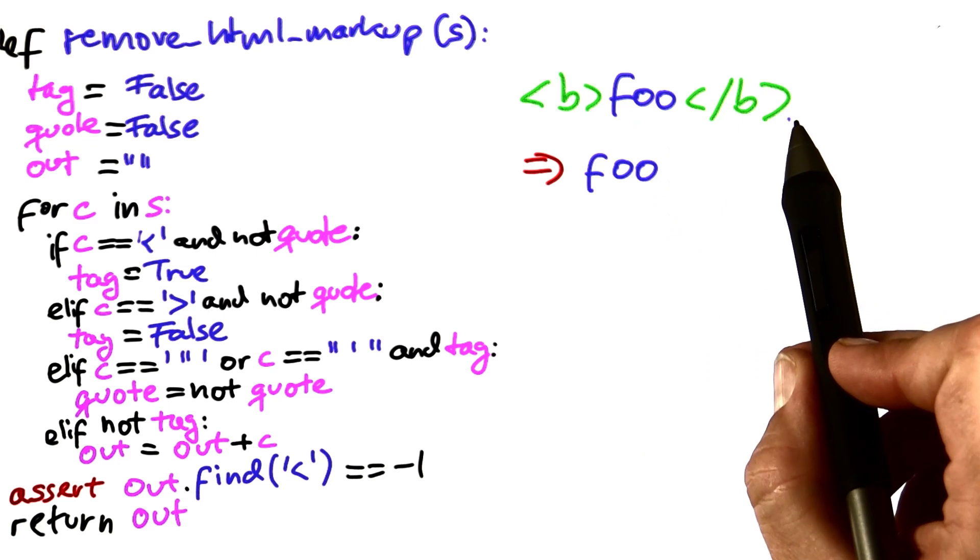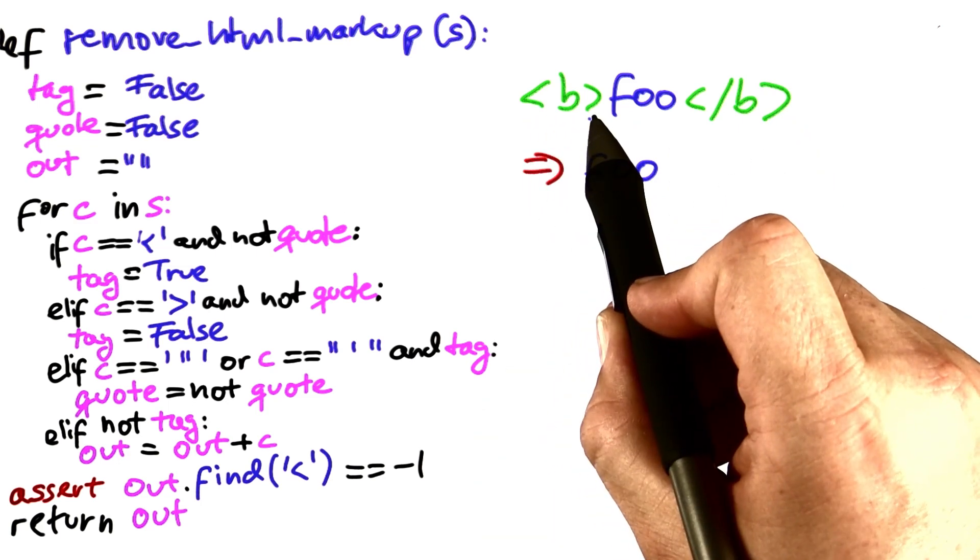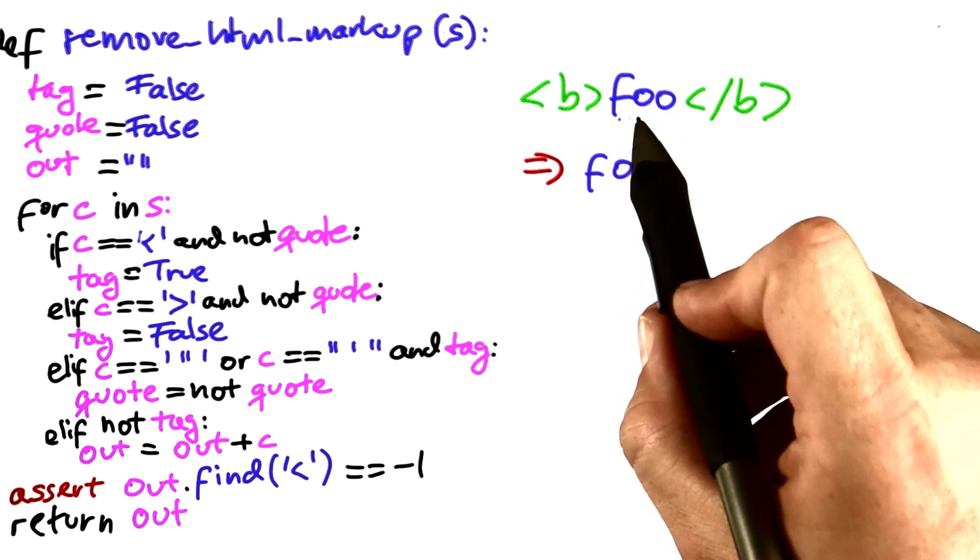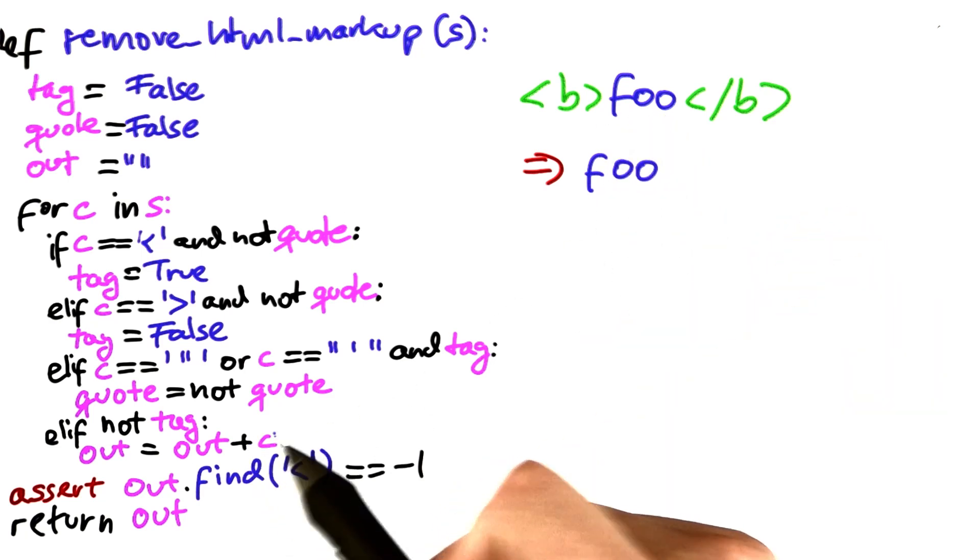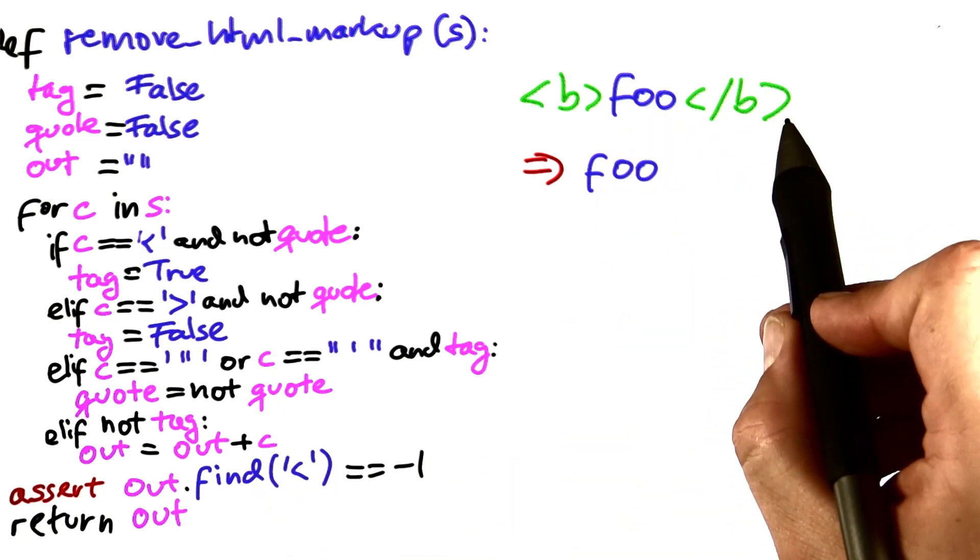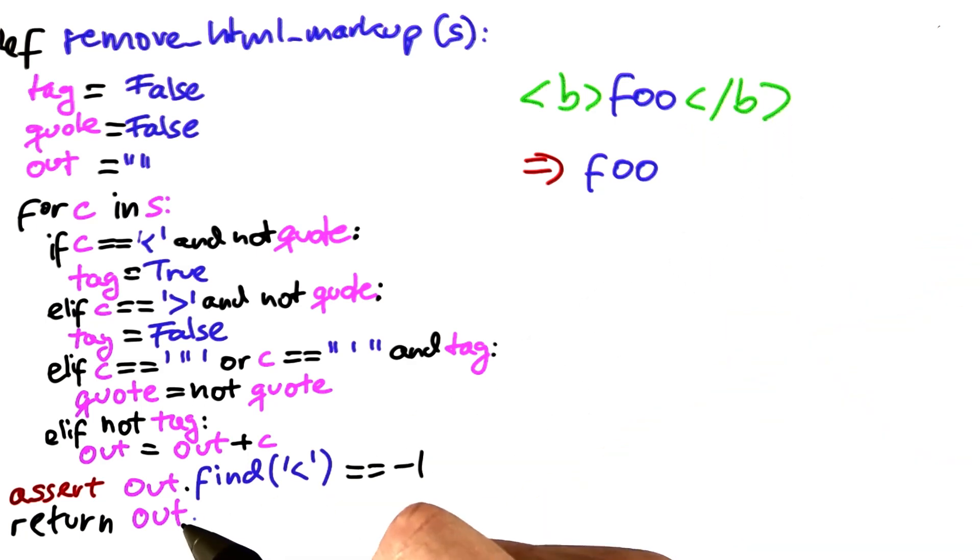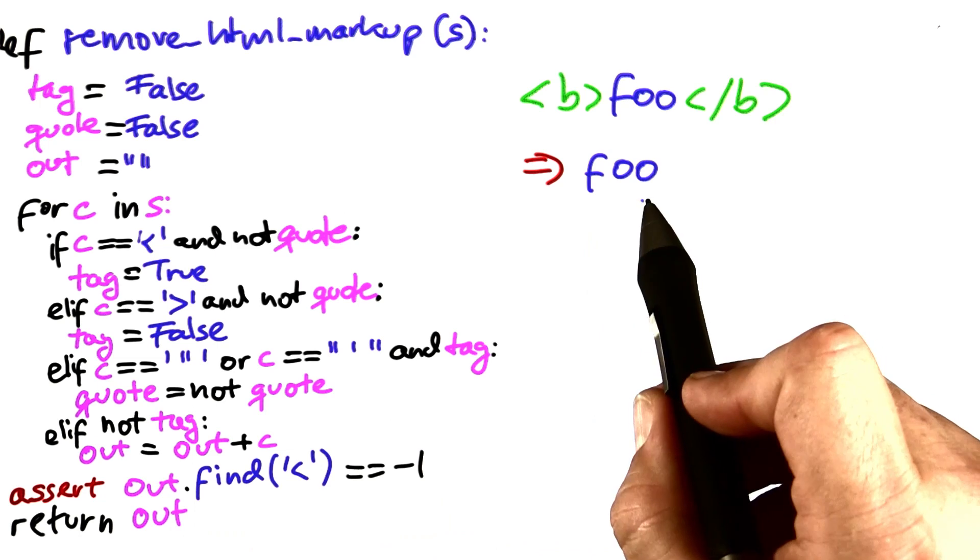So while we are processing this code, tag would be true for these three characters, then tag would be false, foo would be added to the output, and then finally we would have four more tag characters which would not be added. In the end, what we get is this string: foo.